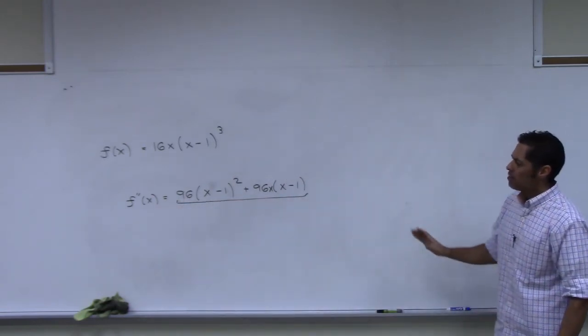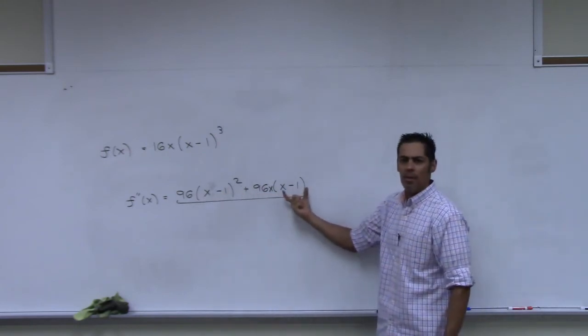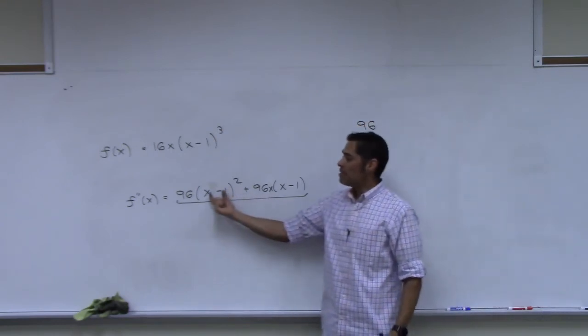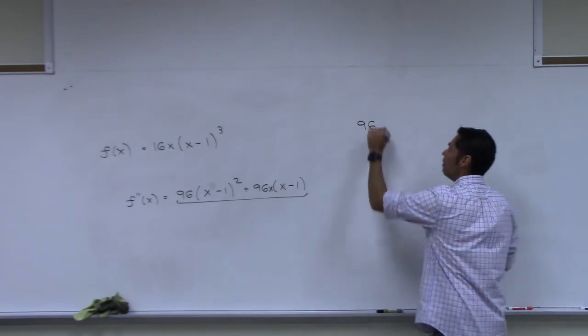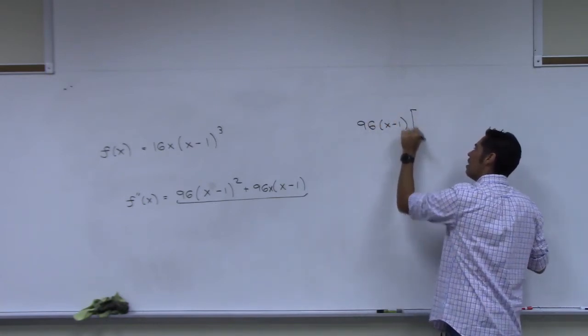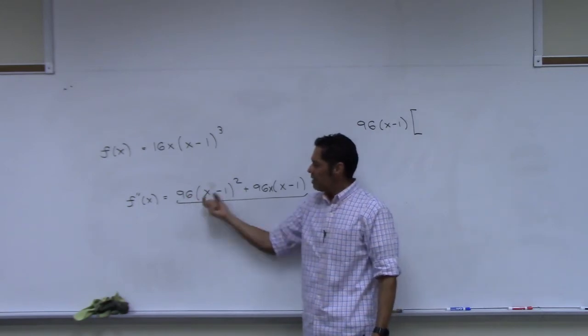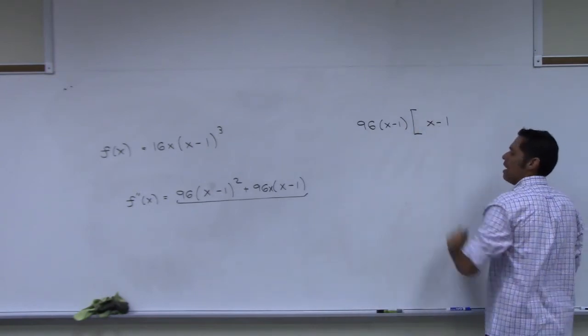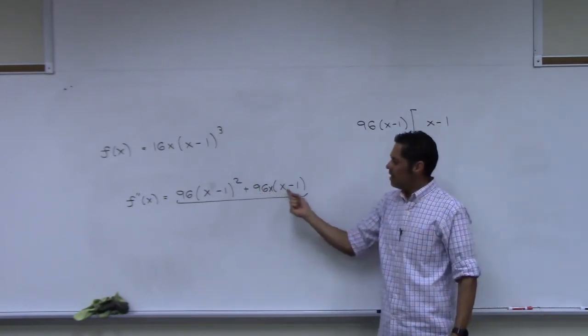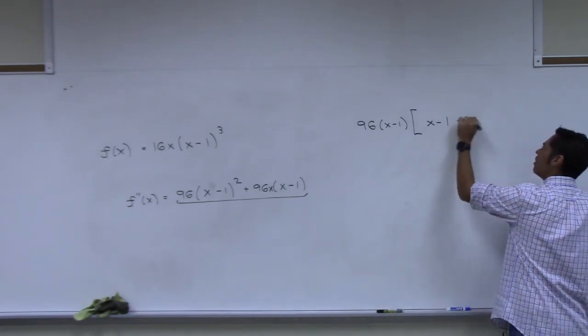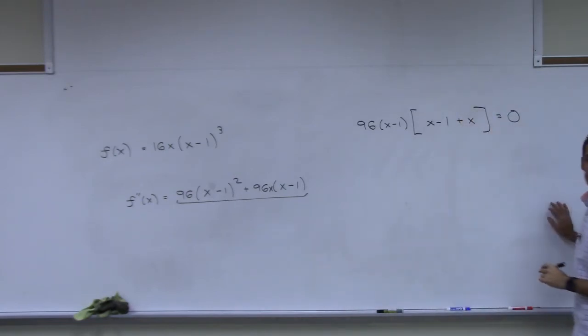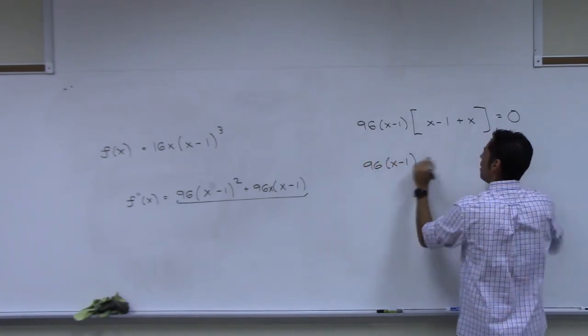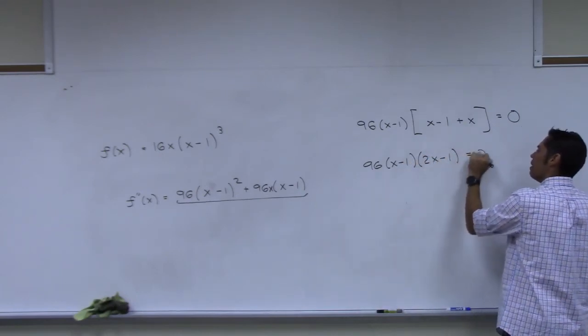So when you look at these two terms, we see what they both have in common. They both have a 96, so I pull a 96 out. They both have an x minus 1. So I pull an x minus 1 out. And then what I'm left with is what? If I pulled this 96 out and I pulled one of these out, what will I still have? An x minus 1. Plus x. And then I pulled the 96 and the x minus 1 out, so I'm still left with an x there. So plus x here. Right? And I'm setting all that to zero.